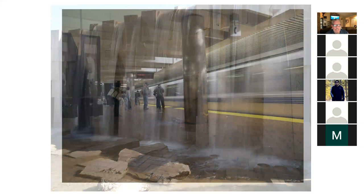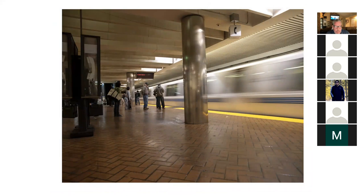Here I'm waiting in the BART station to get a train. I rested the camera on one of those brick seating areas, and the exposure is about 1/30th of a second - not super long. You can see the logo on the right-hand side that says BART, which tells you it's not a super long exposure. It's just that the train is a blur but the people are still holding still.